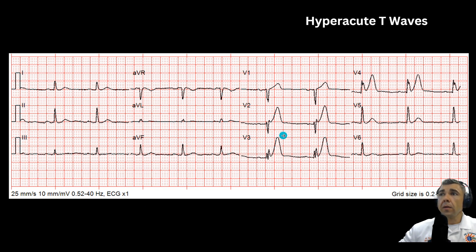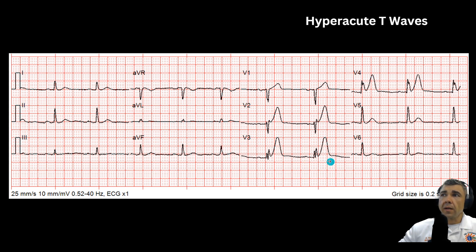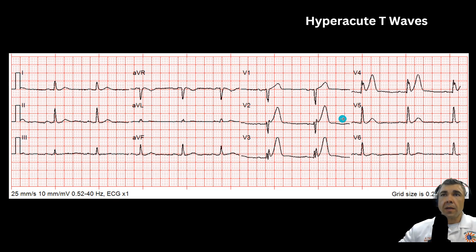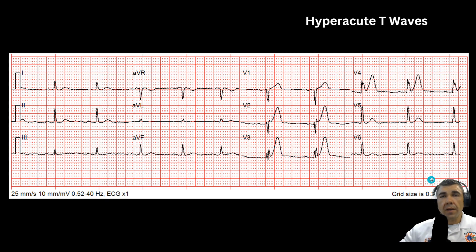Hyperacute T-waves are these tall, symmetrical T-waves — a little bit more obvious on this one — and you can see they are starting to have some elevation as well. If you see those tall T-waves that are symmetrical, especially if they're broad-based, they're not hyperkalemic T-waves, they're hyperacute T-waves. Consider the company that it keeps — every 12-lead comes with a patient. If your patient is presenting with cardiac symptoms along with a 12-lead that looks like this, start treating them even if it doesn't have the elevation. Just don't call the STEMI alert. Transmit the 12-lead, start providing treatments, and get them transported to the correct facility.